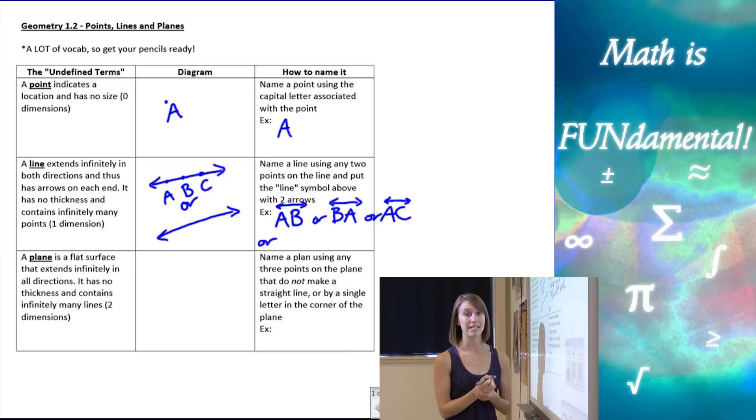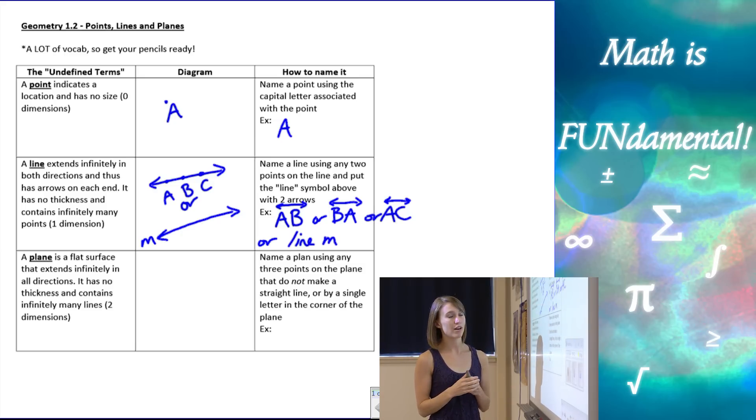Another way we can name a line is if they give us a little letter at the end of the line. For example, here I've used an M, and in that case we would write line M. So that's just another option for us if we're given that letter. Sometimes you'll only be given points on the line. Sometimes you'll be given a letter next to the line.